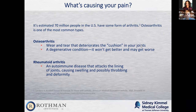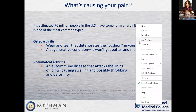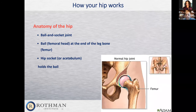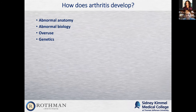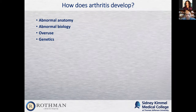Osteoarthritis is a very common condition. It's a wear and tear condition that deteriorates the cushion in your joints. What you see here is all this pink stuff covering the top of the femoral head — that represents cartilage. When cartilage rubs on cartilage, that's a smooth surface rubbing on a smooth surface, and that allows you to move without pain. Arthritis is damaged cartilage, where you lose the cartilage.